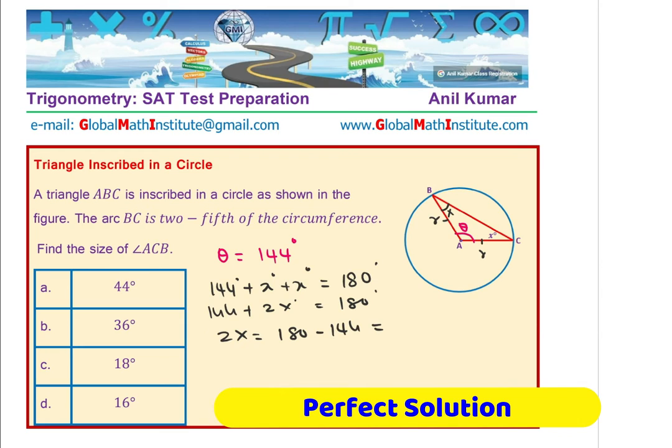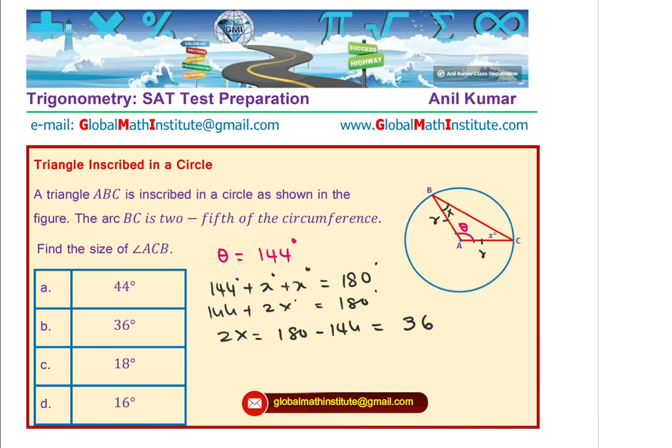So 2x is 180 minus 144. So that gives you 10 take away 4 is 6 and then it is 17 here and from 17 when you take away this you get 36. But that is 2x, right? So 36 is an option but that's incorrect option. So x is equal to 36 divided by 2 which is 18 and therefore the correct option is 18.